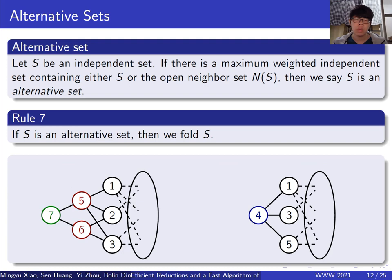The concept of alternative sets is first introduced by Xiao and Nagamochi. Here we consider the general alternative sets in weighted graphs. An independent set is said to be alternative if there is a maximum weighted independent set that contains either I or its open neighborhood set.